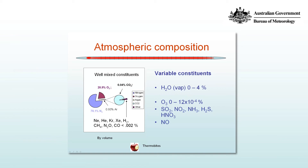The next variable constituent is ozone, and that's fairly much a function of height, so it maximizes concentration near the so-called ozonosphere, well into the atmosphere. But it's also produced by various chemical and industrial processes near the surface of the Earth. And then the remainder represents a small concentration, with various sources including volcanoes and combustion and so on.